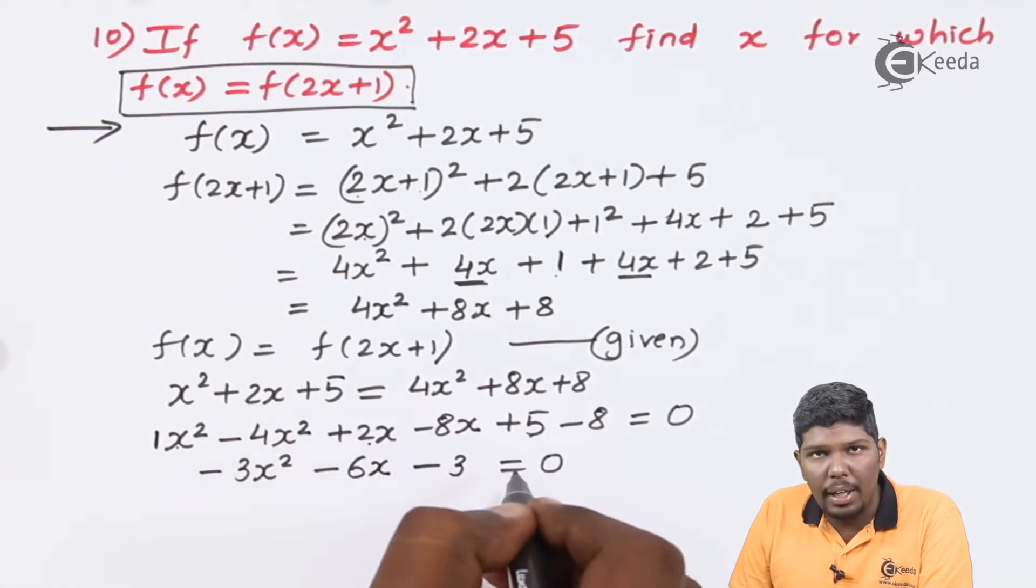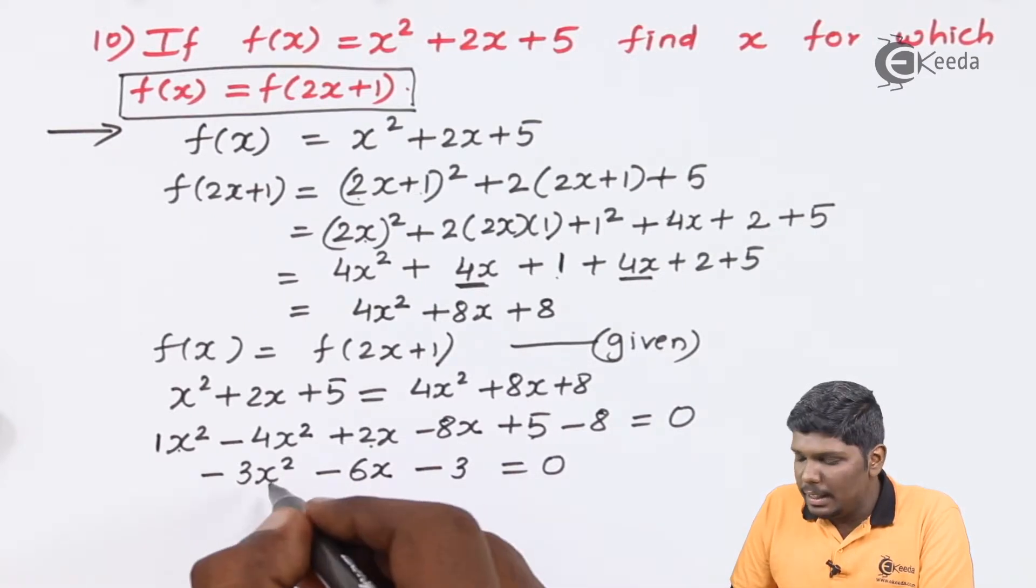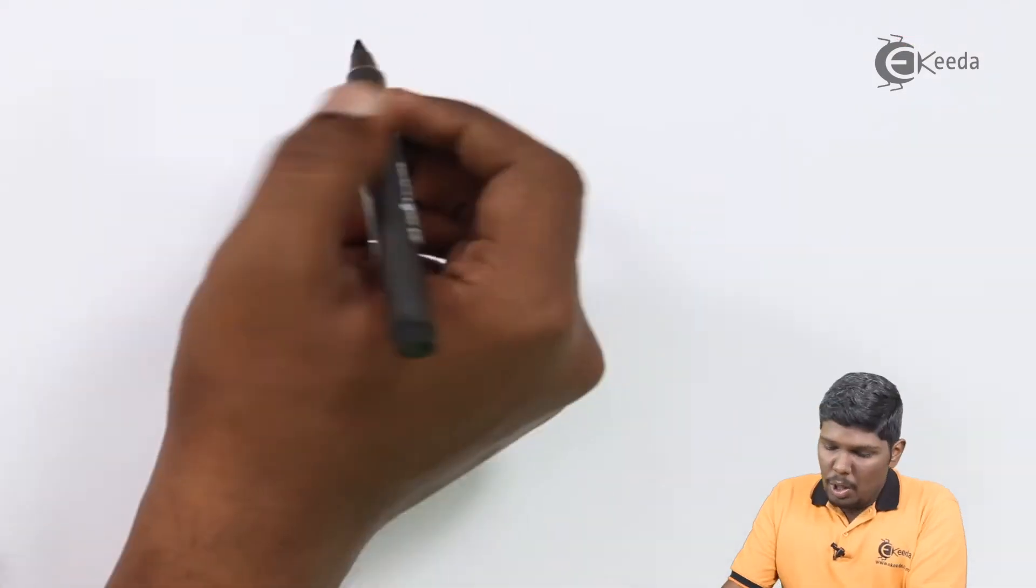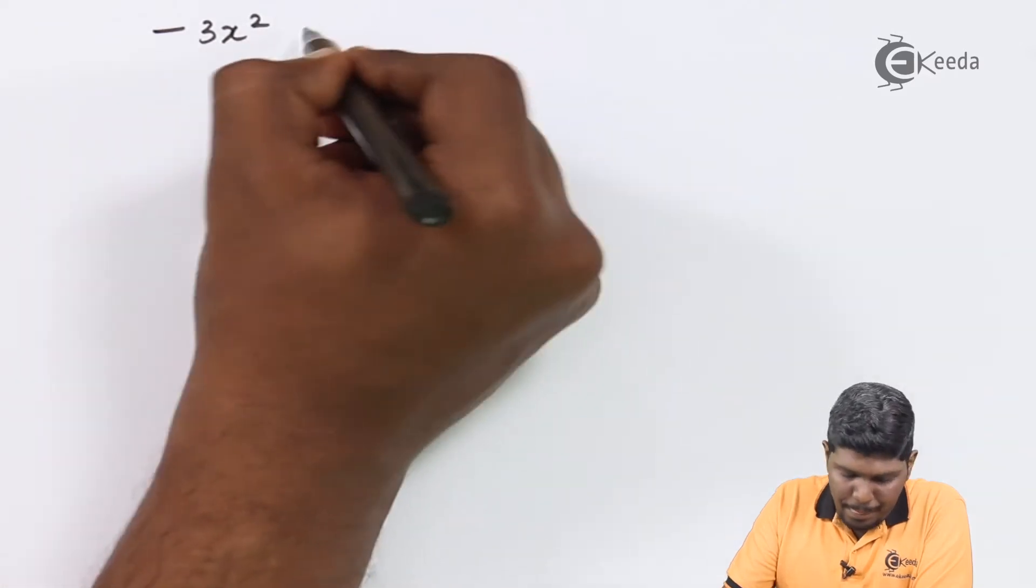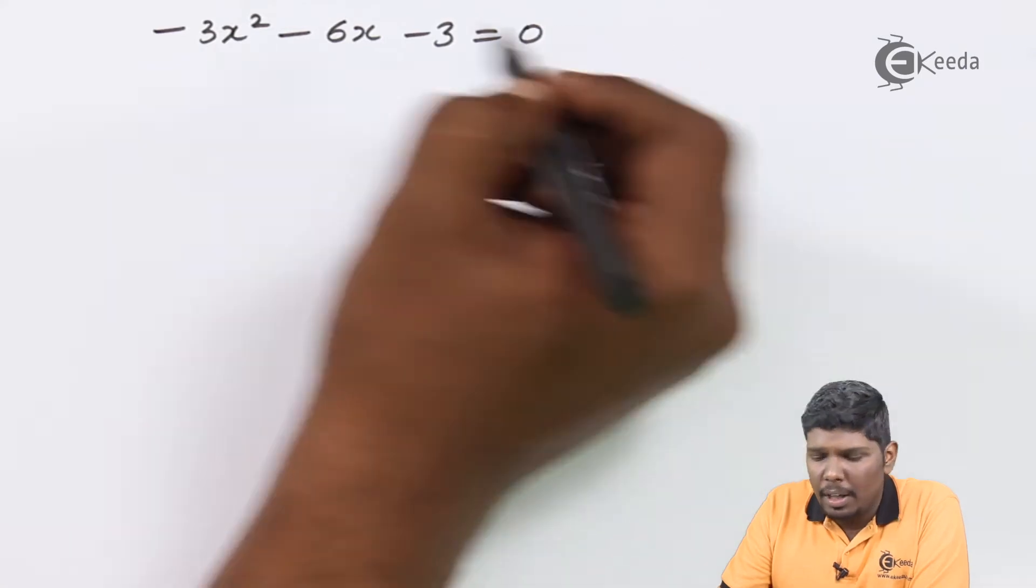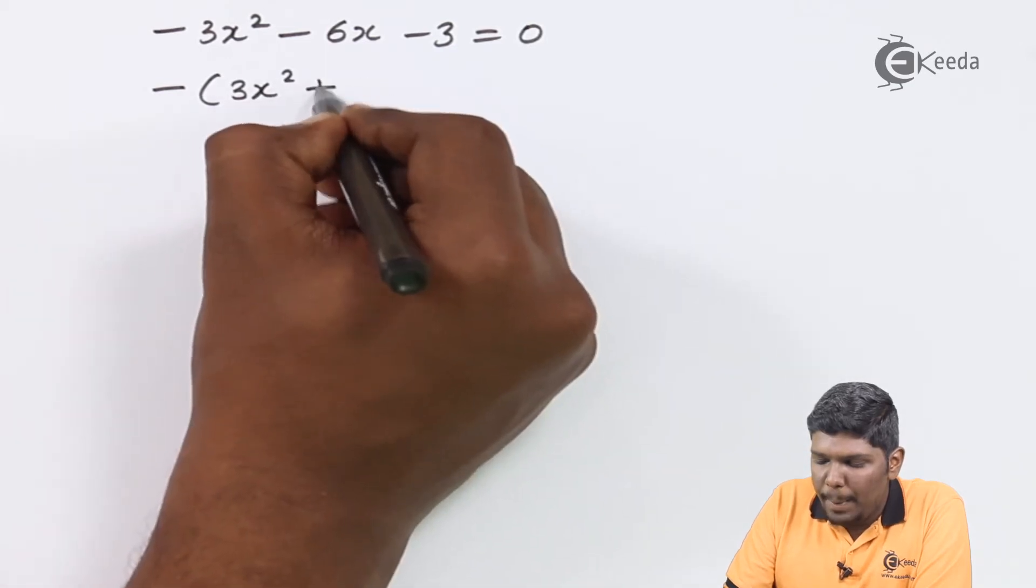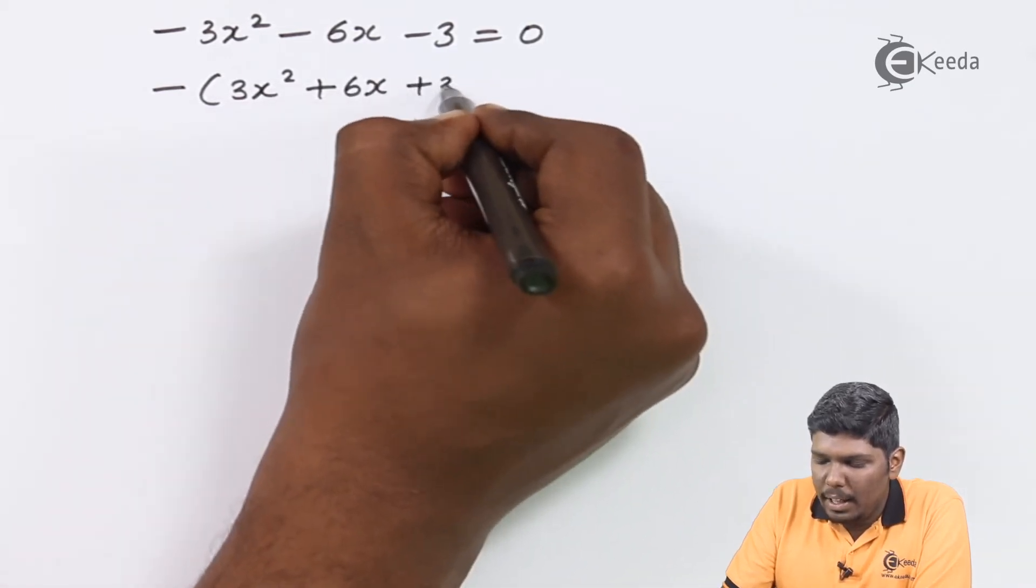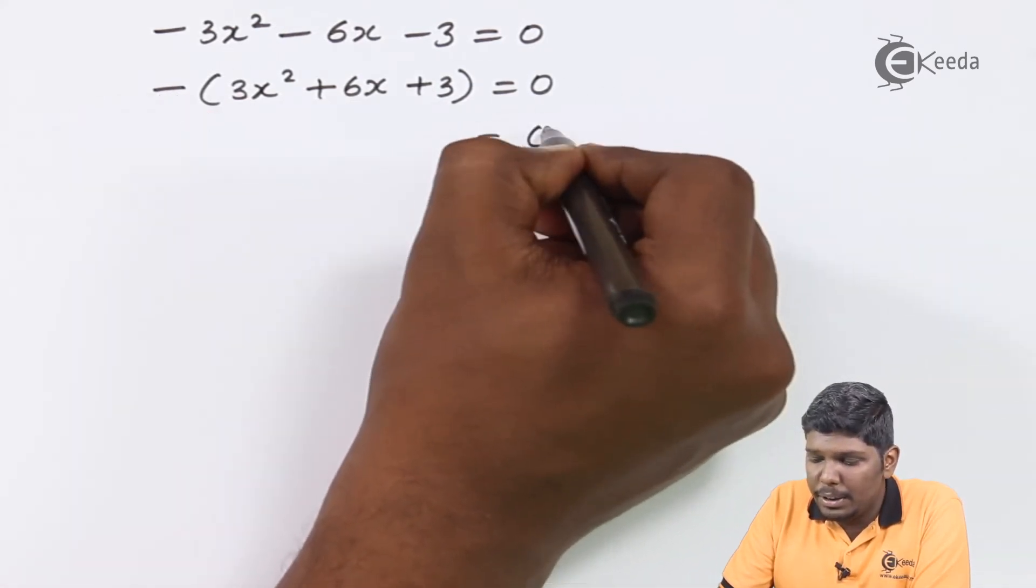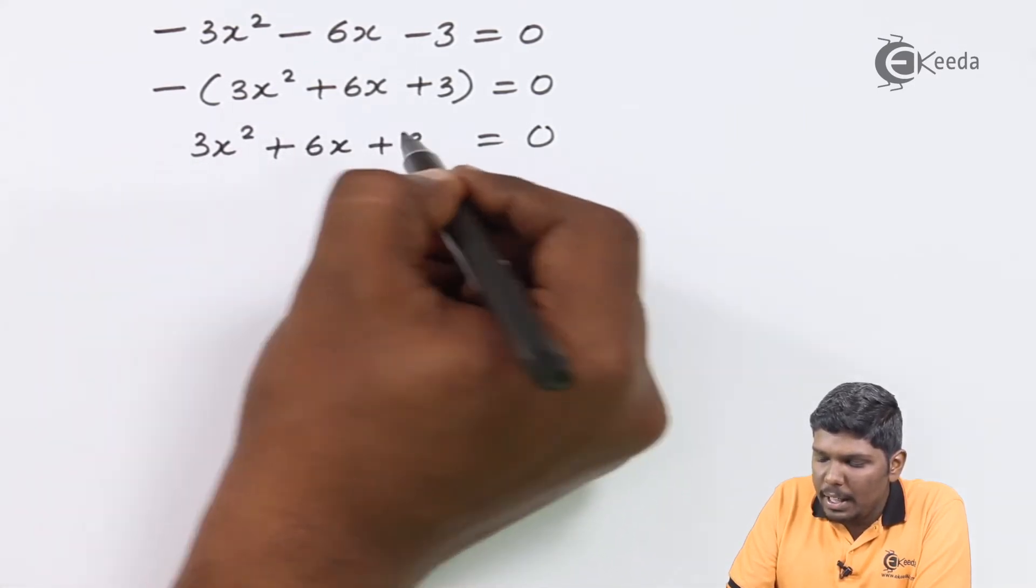So if you observe this, we have a quadratic equation. By now you should know that we will be getting 2 values of x since we have a quadratic equation. Now let us copy down this equation: -3x² - 6x - 3 = 0. We can take minus sign common, so all the terms will be positive: 3x² + 6x + 3 = 0.